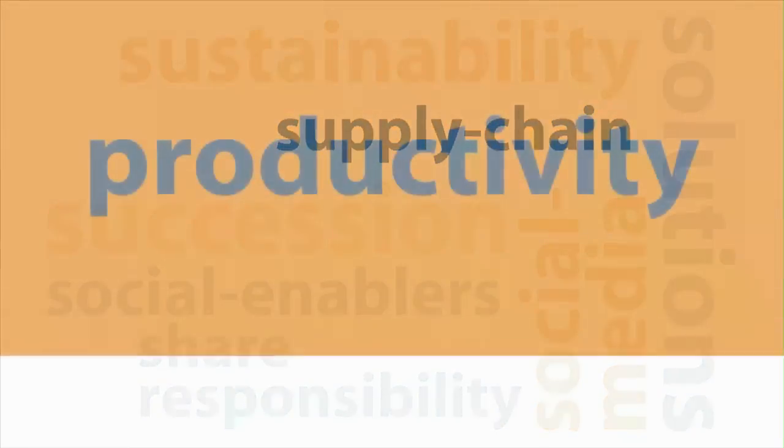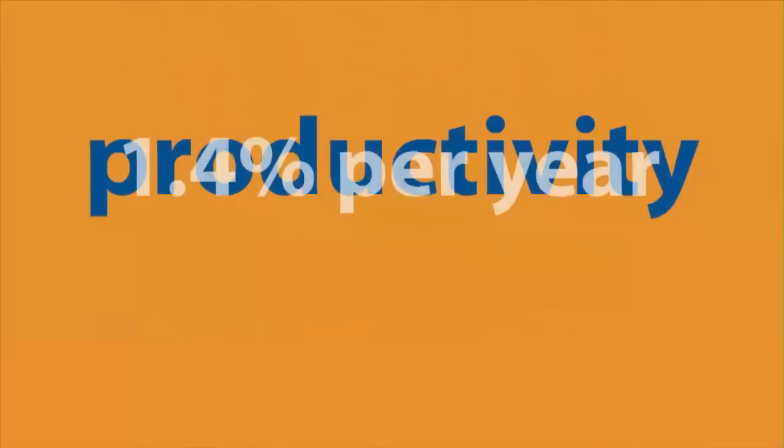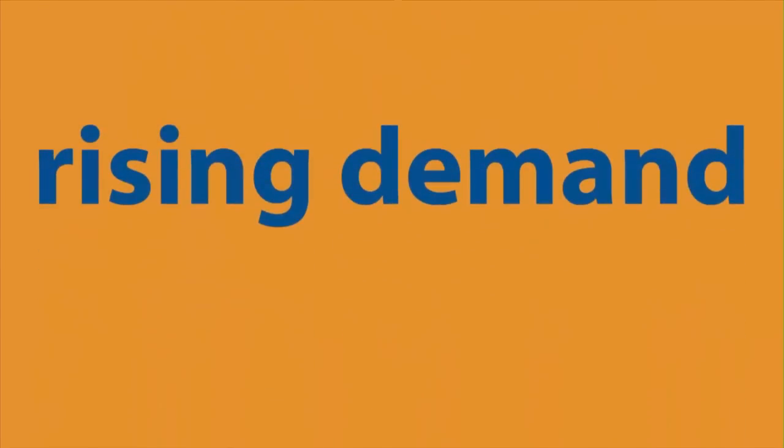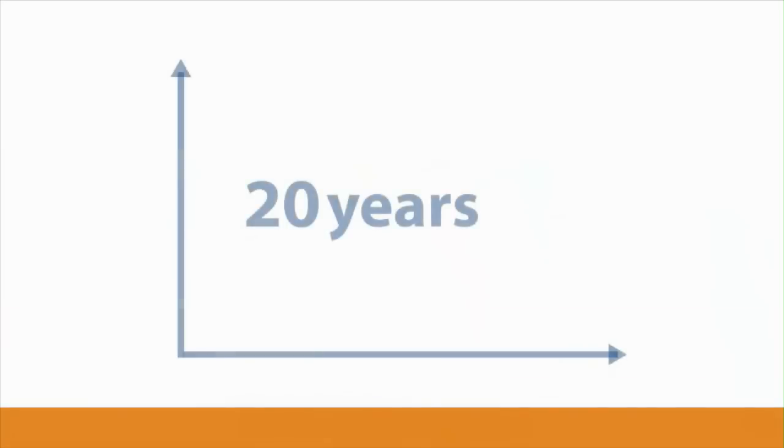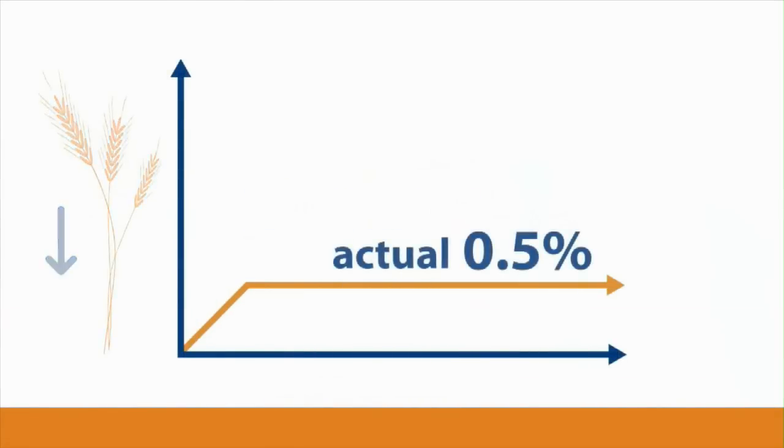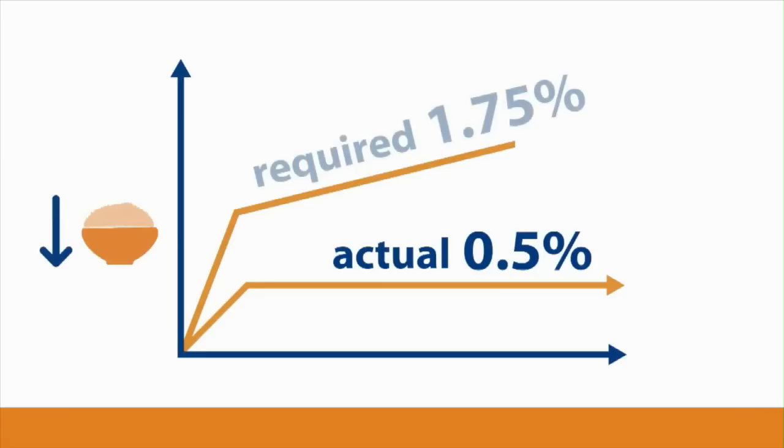Productivity gain of major commodities has slowed down to 1.4% per year. To meet rising demand, it should be at least 1.75%. The last 20 years, productivity growth for wheat decreased to 0.5% per annum. A similar trend holds true for rice, so the two most important staple crops in the world have had almost flat yield increases due to a lack of sufficient investments.